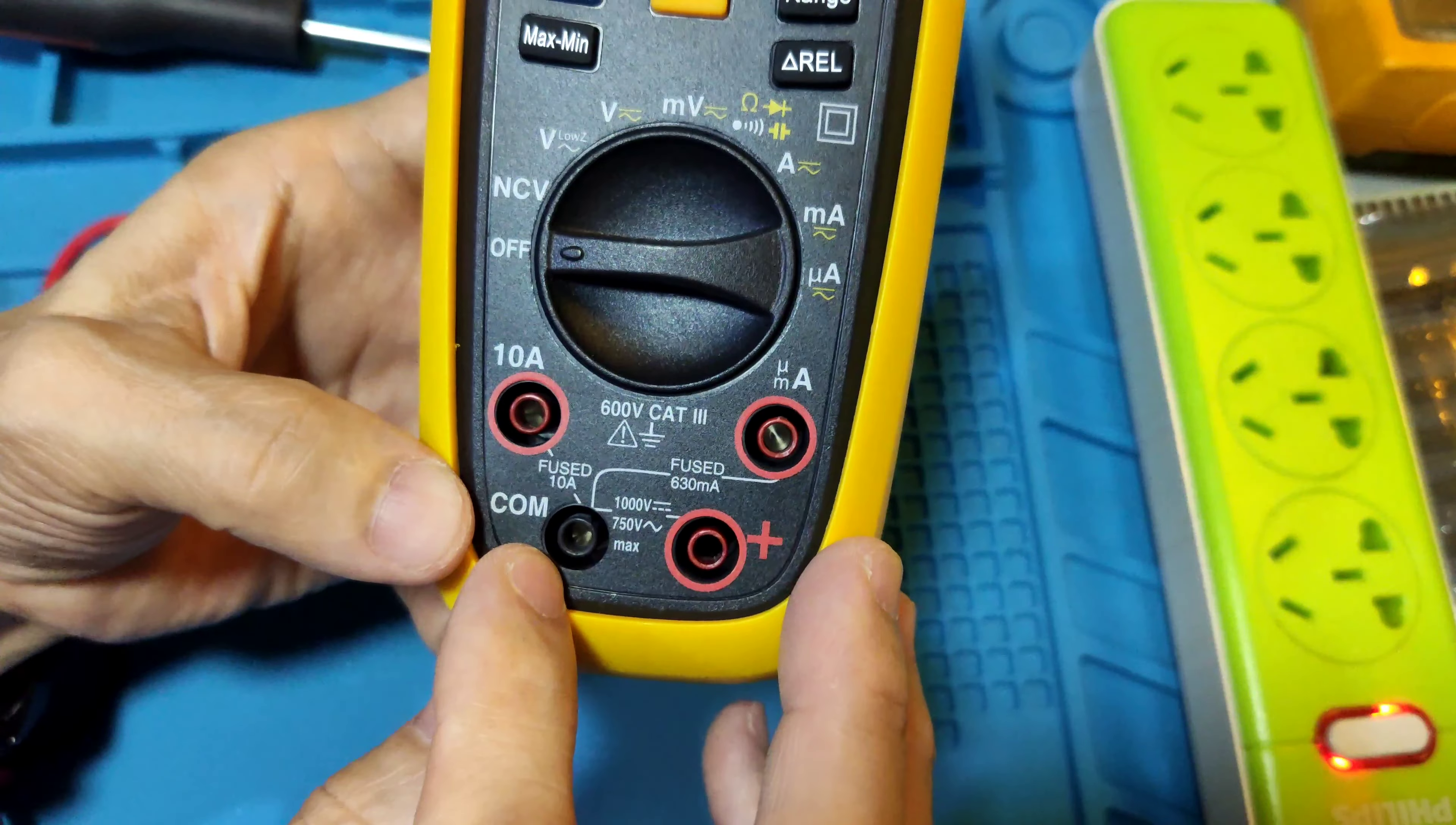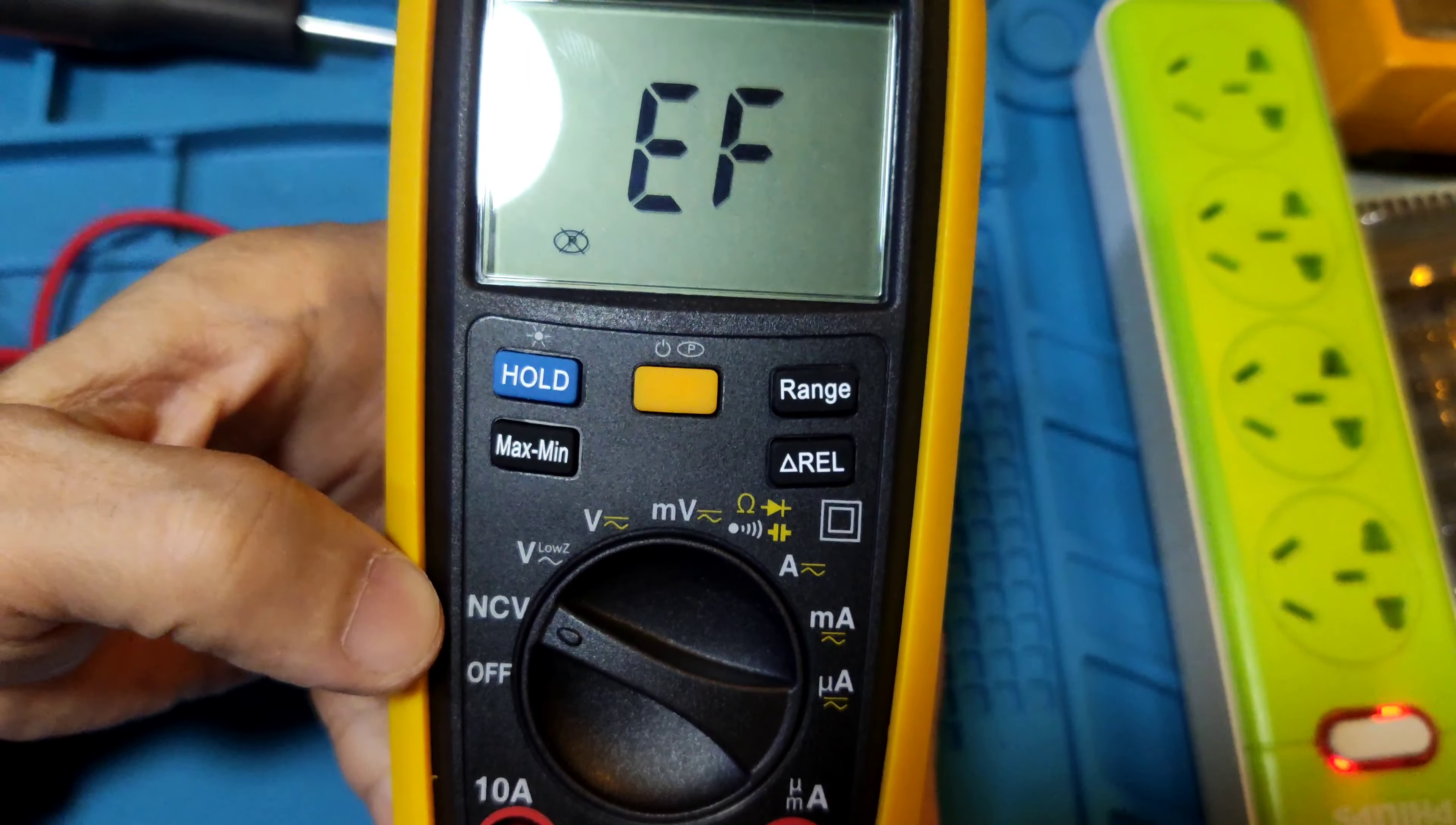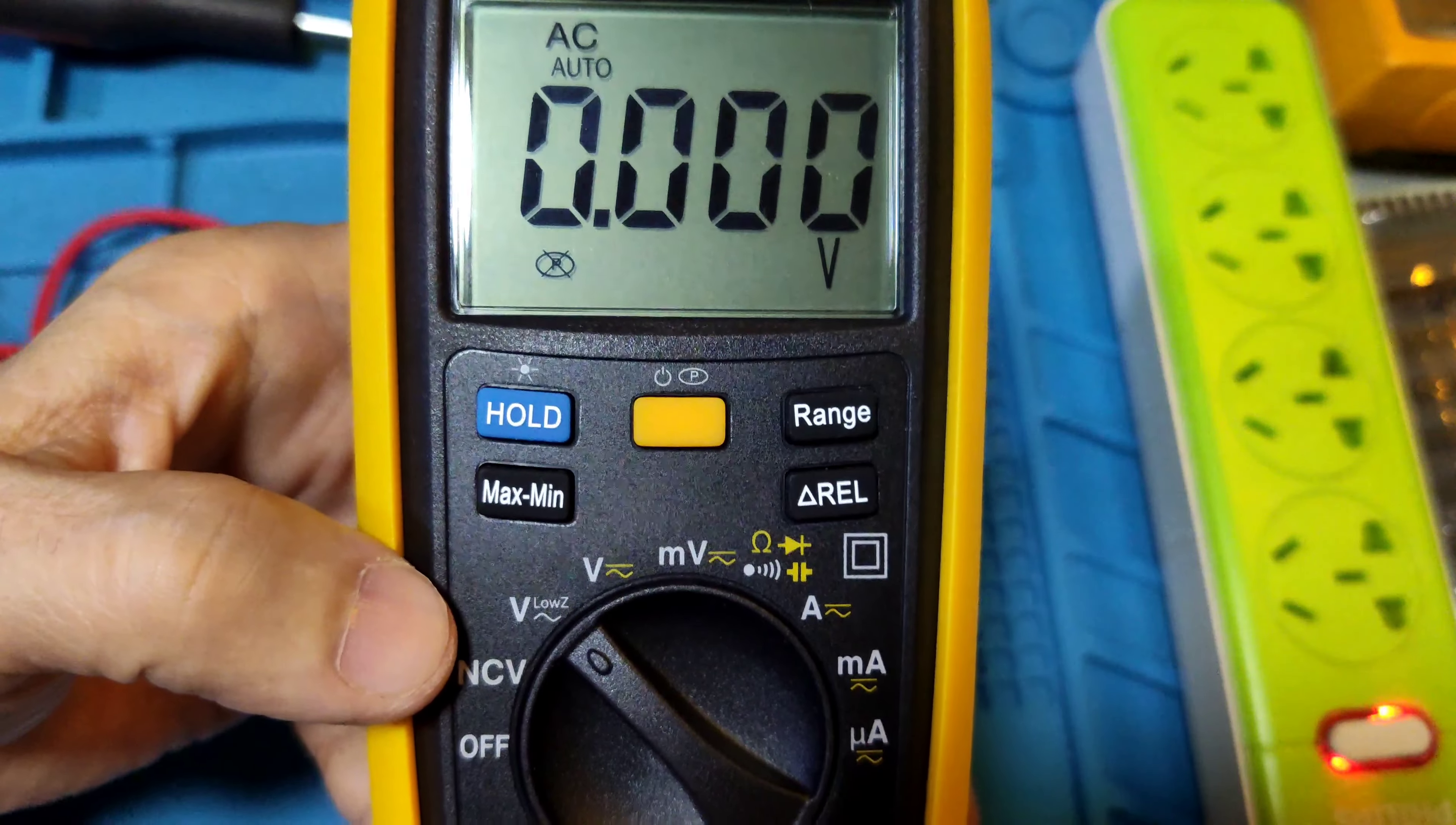The meter downside has a common port, a normal input terminal, a current input terminal 10A micro amp and milliamp input terminal. First position is off. First function is NCV - it displays EF for the NCV.